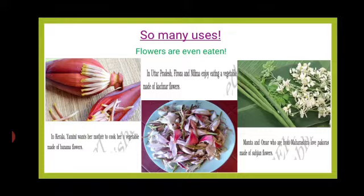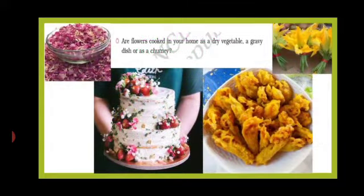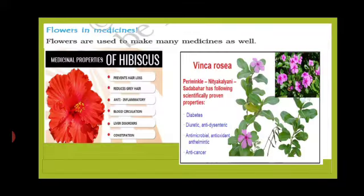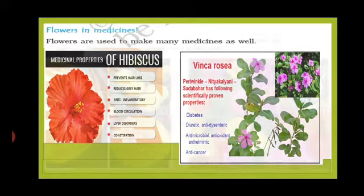In Uttar Pradesh, kachnar flowers are used; in Kerala, banana flowers; in Maharashtra, surgeon flowers are used. We also use pumpkin flower to make pakoras. Flowers are used to make many medicines as well, for example hibiscus, periwinkle and marigold.